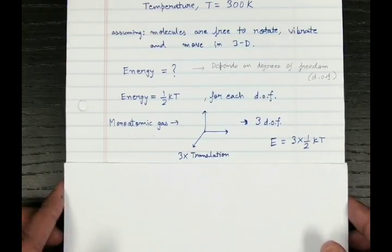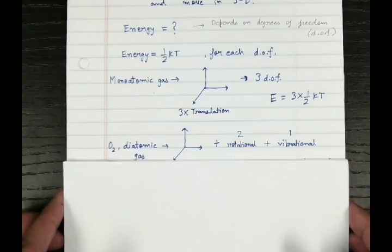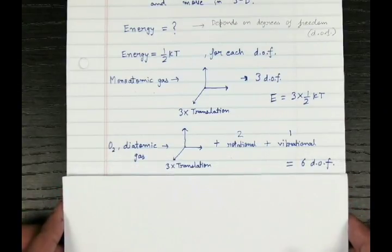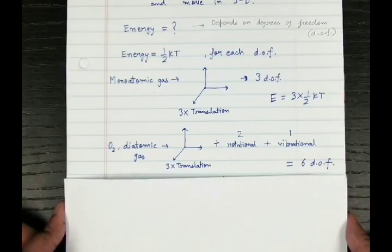For our case we have Oxygen, as you see it is a diatomic gas with two atoms of Oxygen. For a diatomic gas, degrees of freedom are three translational plus two rotational degrees of freedom and one vibrational as well. So the total is six degrees of freedom.